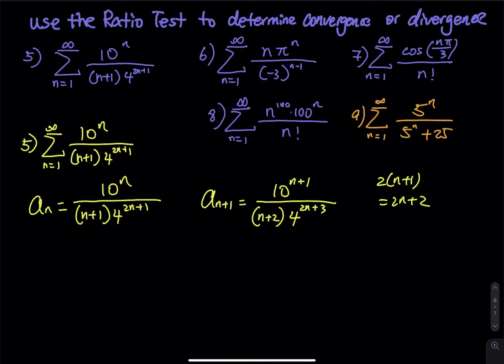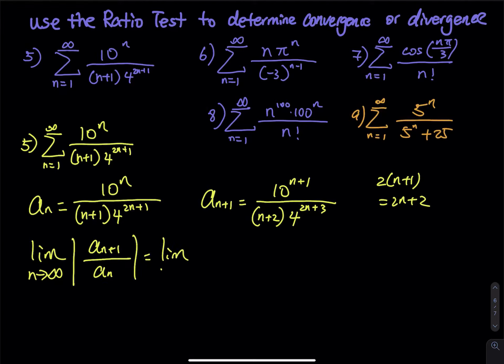Let's take a look at number five. Using the ratio test, we have to prepare a_n and a_{n+1}. The current term we just take straight from the given series, and then a_{n+1} we replace all the n's with n+1. At the beginning of the ratio test we set up a ratio: a_{n+1} divided by a_n in absolute value.